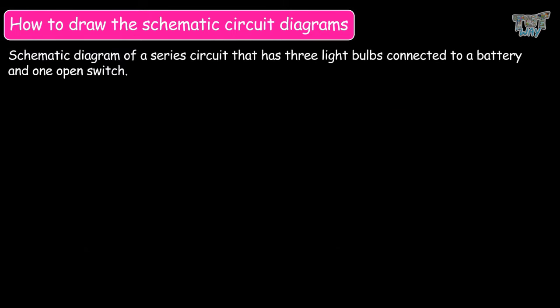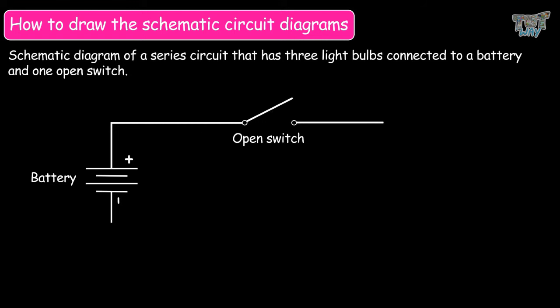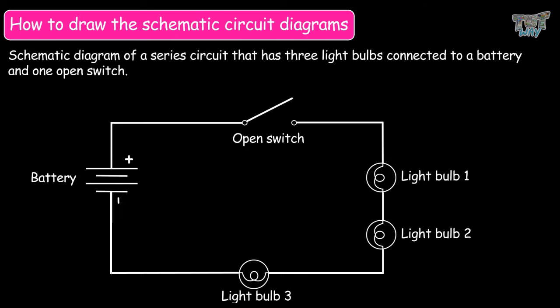Now let's see how to draw a schematic diagram of a series circuit that has three light bulbs connected to a battery and one open switch. First, draw the symbol of a battery and then connect it to the symbol of a switch — here we have used the symbol of an open switch. Then connect this symbol of the open switch to the symbols of three light bulbs joined in series, because we are making a series circuit. End this circuit with the symbol of a battery. So we have made a schematic diagram of a series circuit with three light bulbs, a battery, and one open switch.